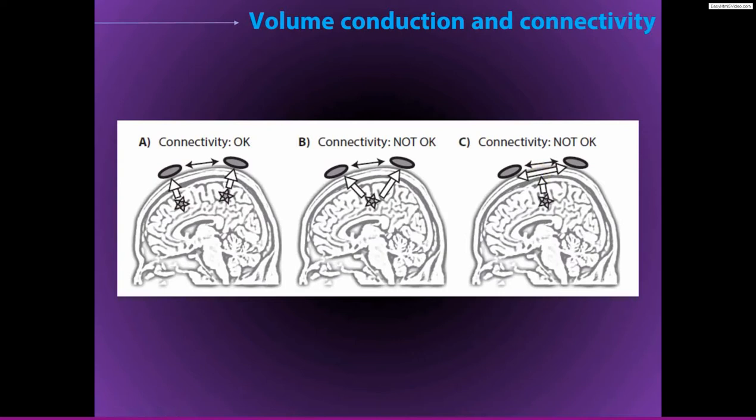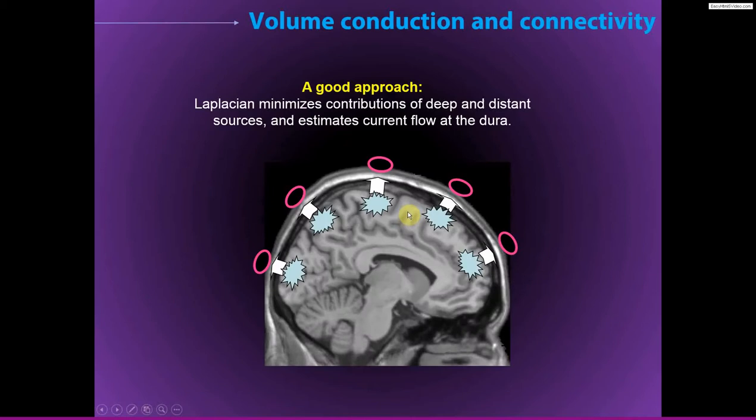These three situations are kind of mixed together. The reason why this is problematic is that if you see a connectivity result between two electrodes, you don't know to what extent the result reflects true connectivity or these volume conduction artifacts. One good approach that I and many other people recommend is to use the Laplacian — if you're computing connectivity analyses at the electrode level, to first apply the Laplacian to your data in order to minimize the potential volume conduction artifacts.